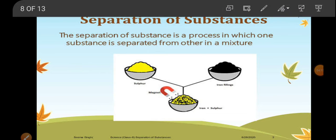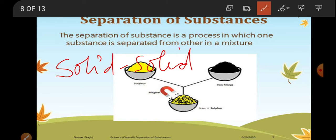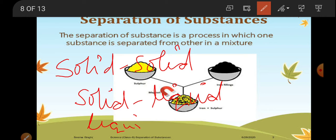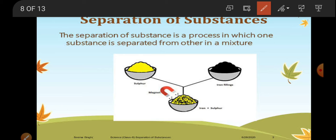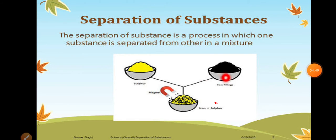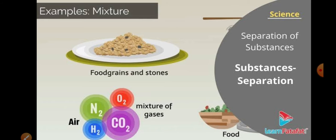In today's class we will learn about different separation methods. We can separate two solid substances together — that is solid-solid separation. We can separate a solid and a liquid together — that is solid-liquid separation. We can also separate a liquid from a liquid — that is liquid-liquid separation. Basically, separation is a process in which one substance is separated from another in a mixture.